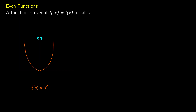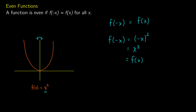So how can we prove this? We can look at a graph and check visually, or we can do it algebraically. This is the graph of f of x equals x squared. We need to show that f of negative x equals f of x. Starting with f of negative x, we replace x with negative x, giving us negative x squared, which is negative x times negative x, giving us positive x squared. Since f of x is x squared, f of negative x equals f of x, so this is an even function.